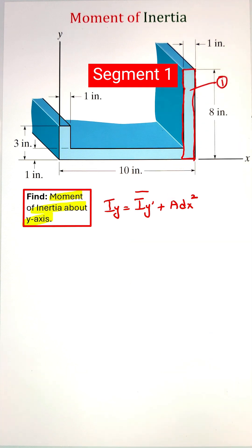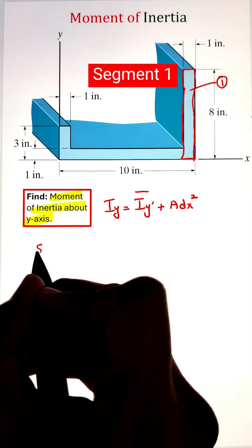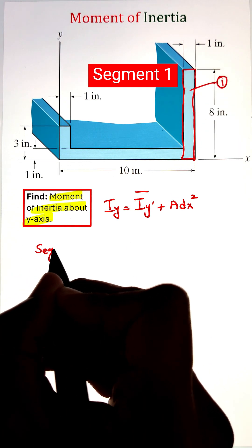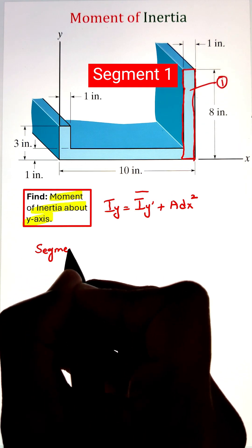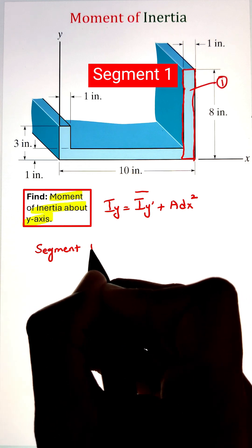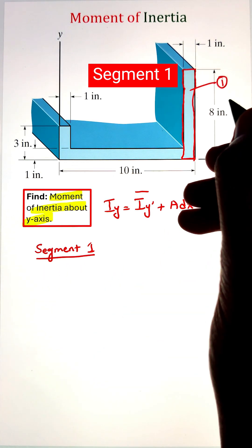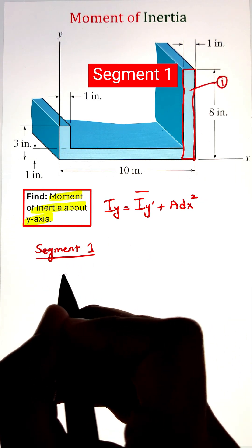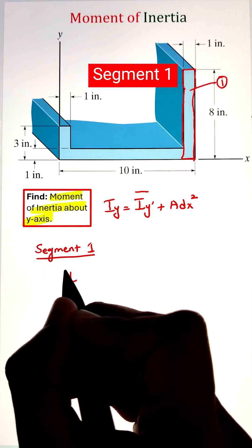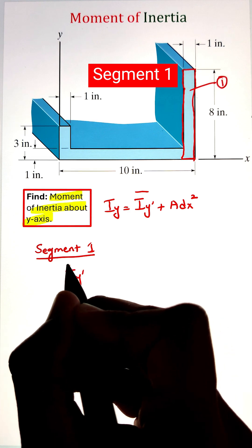Here we are given a composite shape that is made out of three rectangles, so we can calculate the moment of inertia for each one of them and then add them up together to calculate our total moment of inertia about the y-axis.